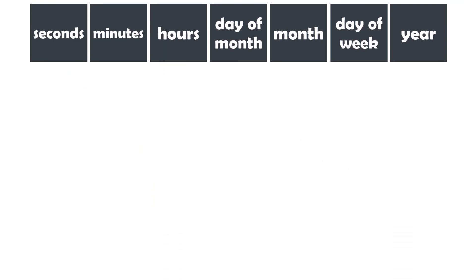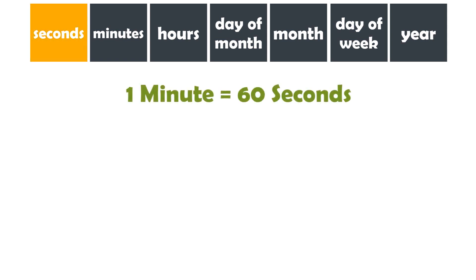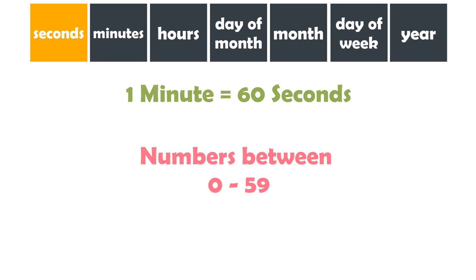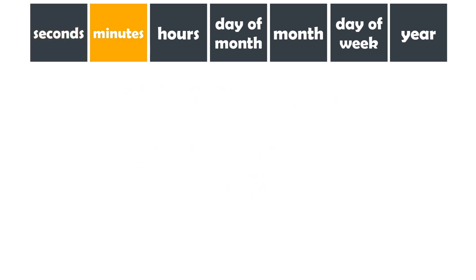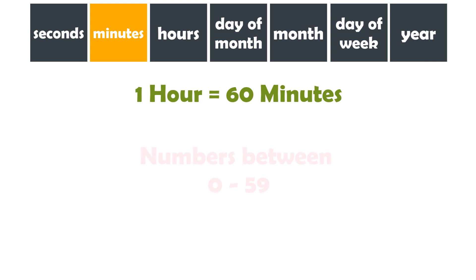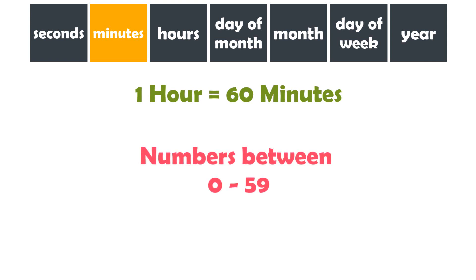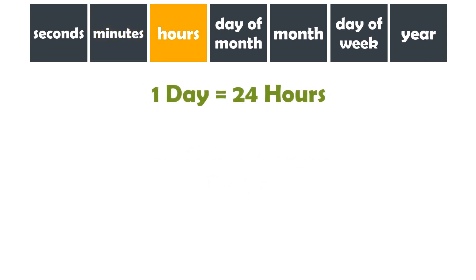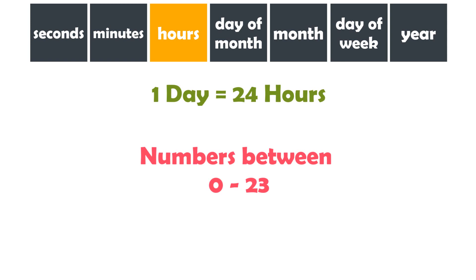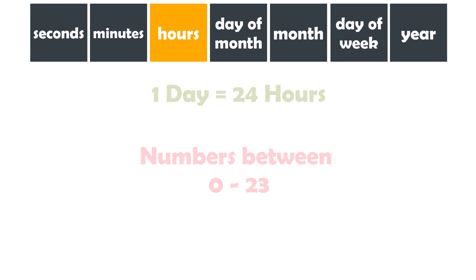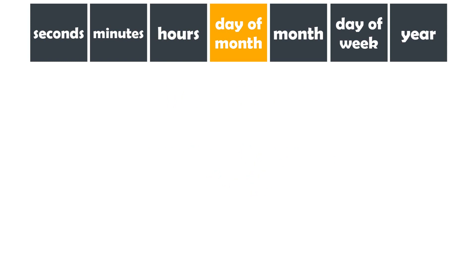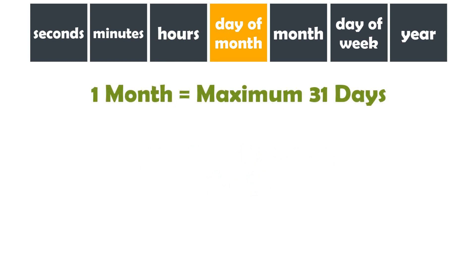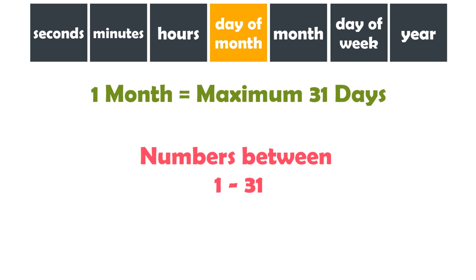First let me show you what can be entered in each field. Seconds field: we already know that one minute consists of 60 seconds, and therefore all numbers between 0 and 59 can be entered in this field. Minutes field: an hour also consists of 60 minutes, and therefore only the numbers between 0 and 59 can be entered here. Hours field: a day consists of 24 hours, and therefore numbers between 0 and 23 can be entered in this field. Day of the month field: a month can consist of a maximum of 31 days, so the numbers 1 to 31 can be entered in this field.